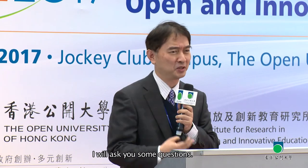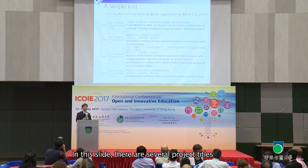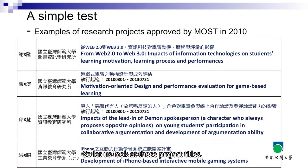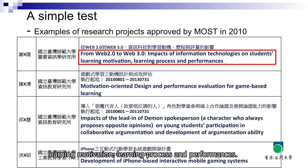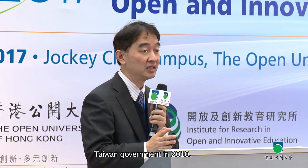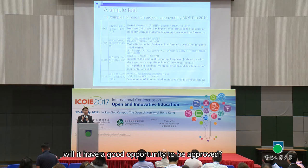I'd like to conduct a simple test. I'll ask some questions. In this slide, there are several project titles approved by the Taiwan government in 2010. The first one is 'From Web 2.0 to Web 3.0: Impacts of Information Technology on Students' Learning Motivation, Learning Process and Performances.' This project was approved in 2010. If proposed in 2017, will it have a good opportunity to be approved?